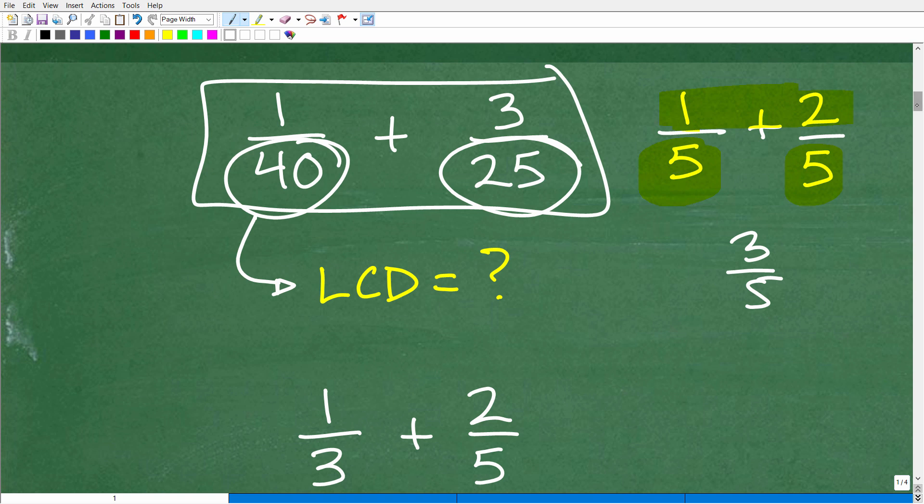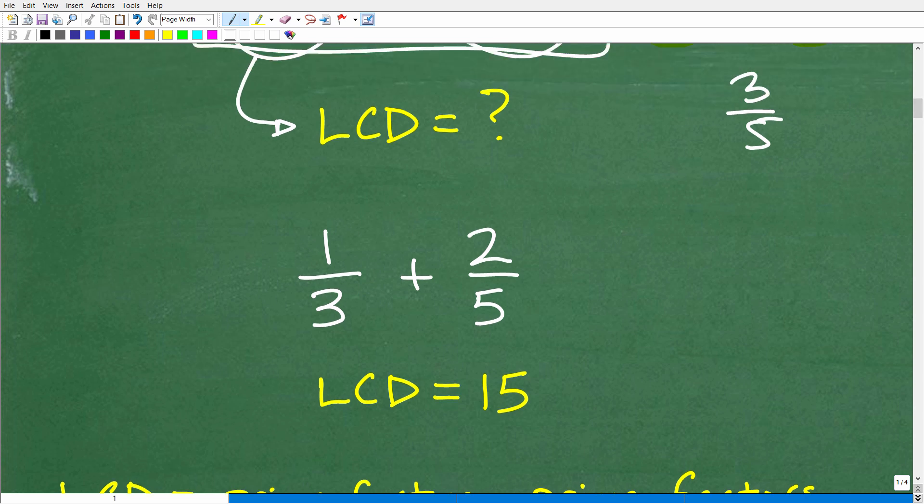Now let's just take a look at a super easy problem right here. One third plus two fifths. Most students have, I suspect most people, if I said, Hey, what's the LCD here? You would just say, Oh, it's 15. And you would be like, well, why is it 15? And you would be like, well, just because, right? Well, yeah, it is true. The LCD is 15.